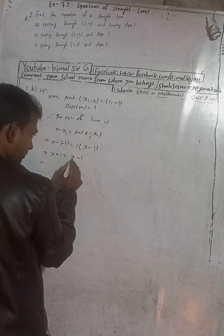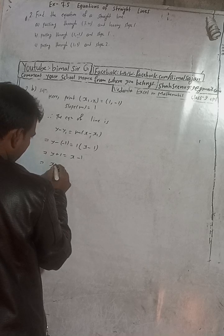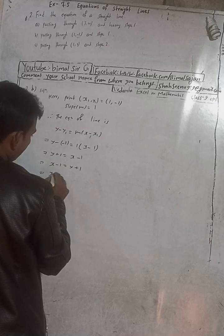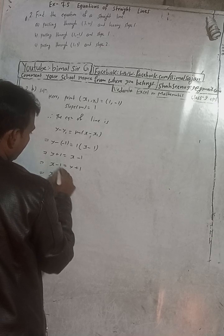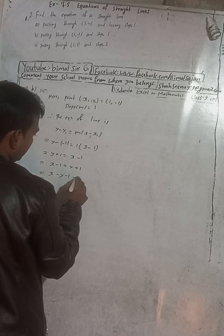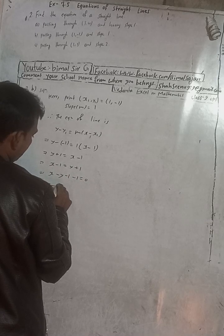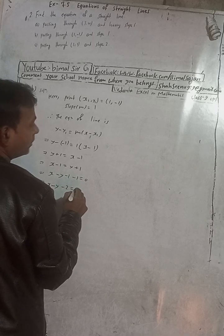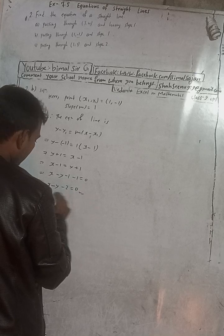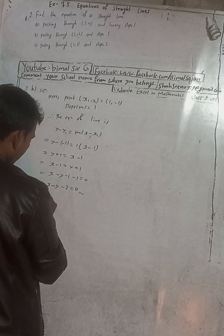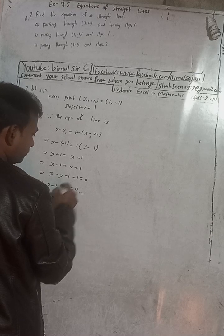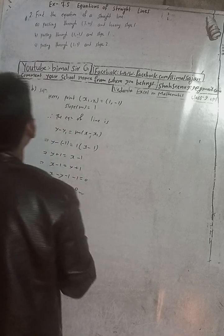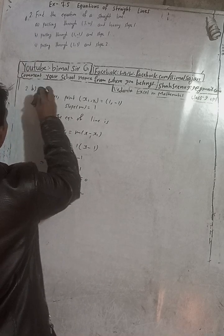This gives y minus minus 1, which is y plus 1, equals 1 into x minus 1. Since x is positive on the right side, take everything to the left: x minus 1 equals y plus 1. Rearranging: x minus y minus 1 minus 1 equals 0. Therefore x minus y equals 2. The answer given in the book is x minus y equals 2.